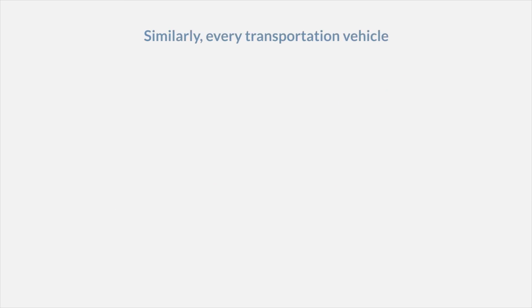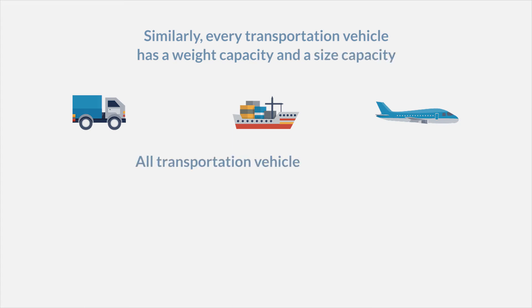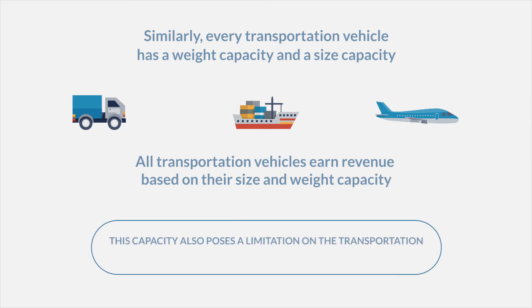Similarly, every transportation vehicle — be it car, ship, or plane — has a weight capacity and a size capacity. All transportation vehicles earn revenue based on their size and weight capacity. This capacity also poses a limitation on the transportation vehicle in terms of size and weight.